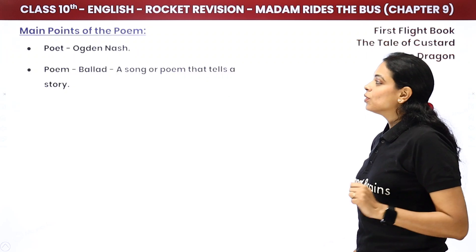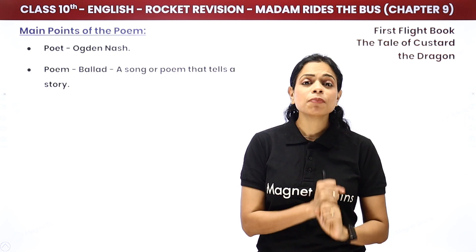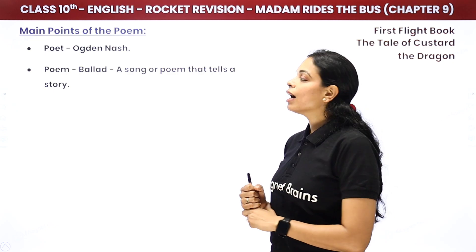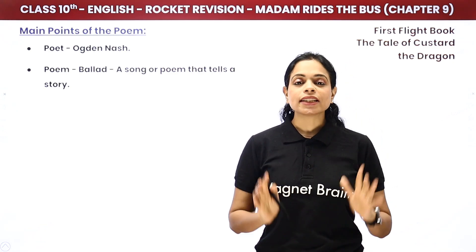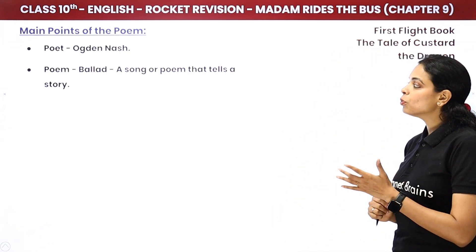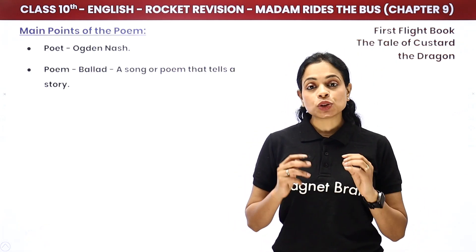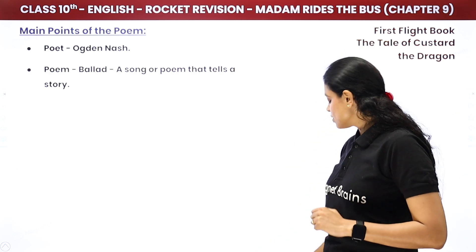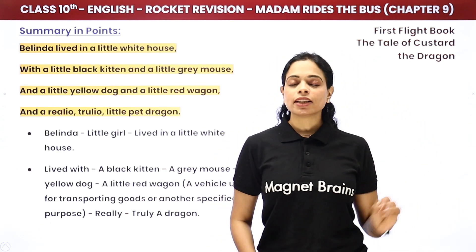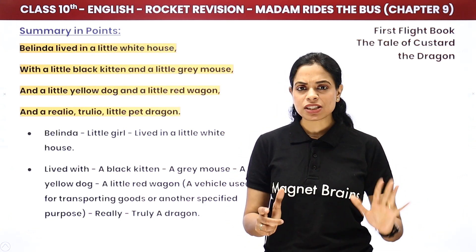First main point — you should know the poet of every poem. Here the poet is Ogden Nash. This poem is a ballad — ballad means a song or poem that tells a story. A story told in the form of a song is called a ballad. We are going to cover the entire poem explanation line by line, but at rocket speed, so you will understand it without wasting time.